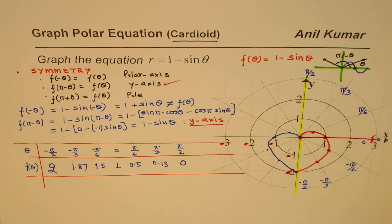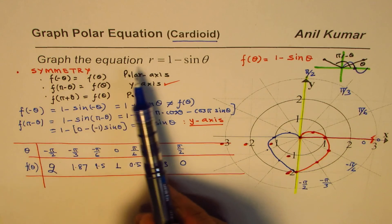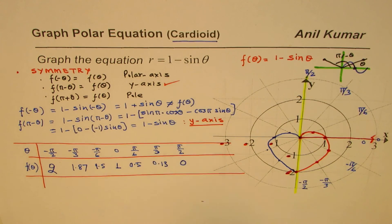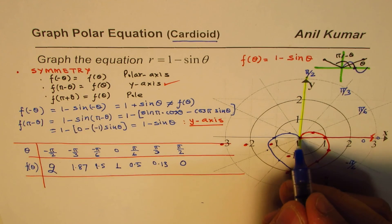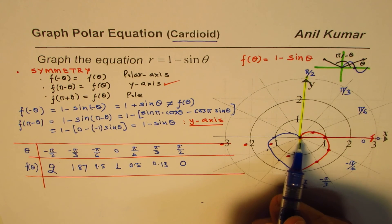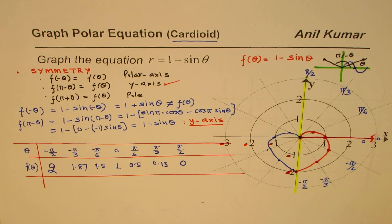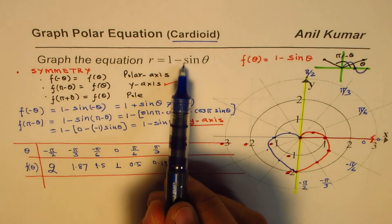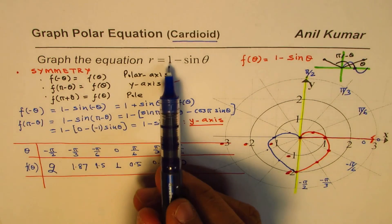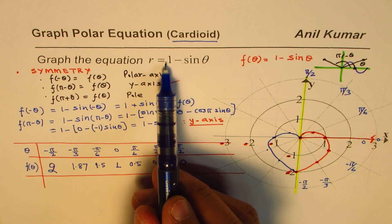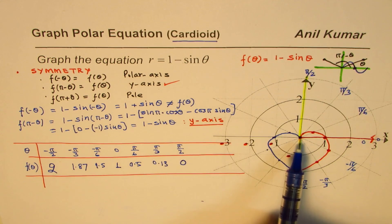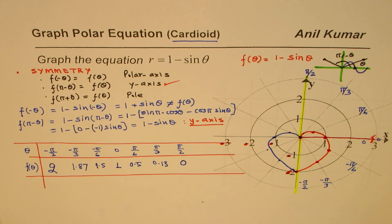This is what you get as the graph of the equation R equals 1 minus sine theta. So the pole is included in this. Do you see that part? There is no loop in it. There is a pole included in this. That's kind of interesting because if I write some number here which is more than one, then in that case you'll see a different scenario. That would be a different curve.